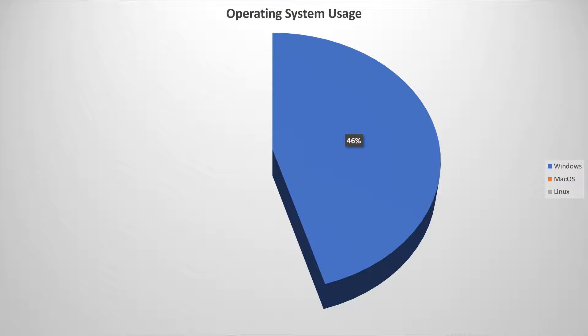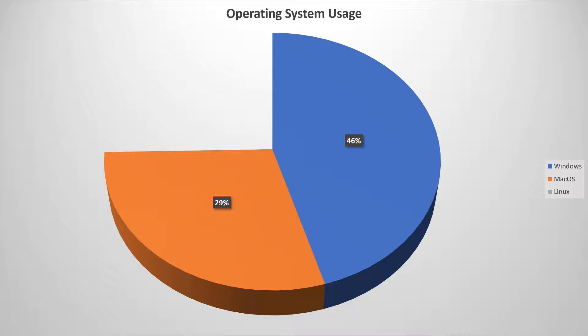A 2019 Stack Overflow survey showed that 45.3% of professional developers are using Windows, 29.2% use macOS, and 25.3% use Linux. I'm a Windows user, and chances are that you are in the statistical group of Windows users as well. And it's very likely that your server runs Linux, as the majority of servers do.